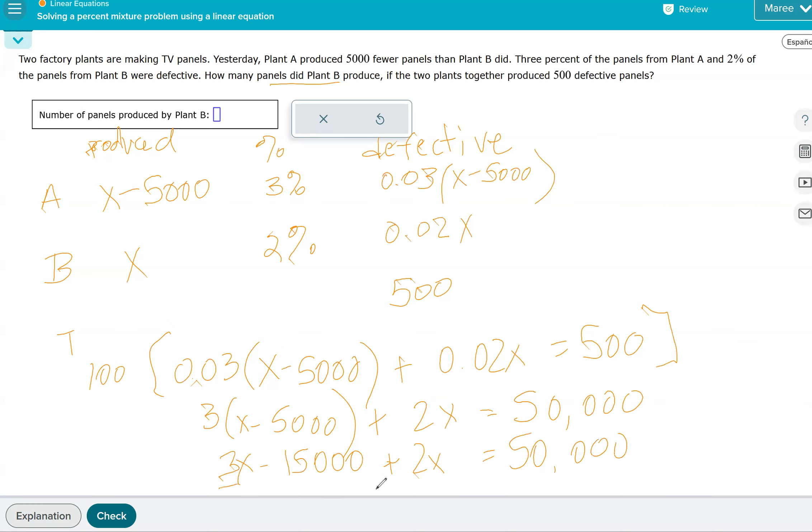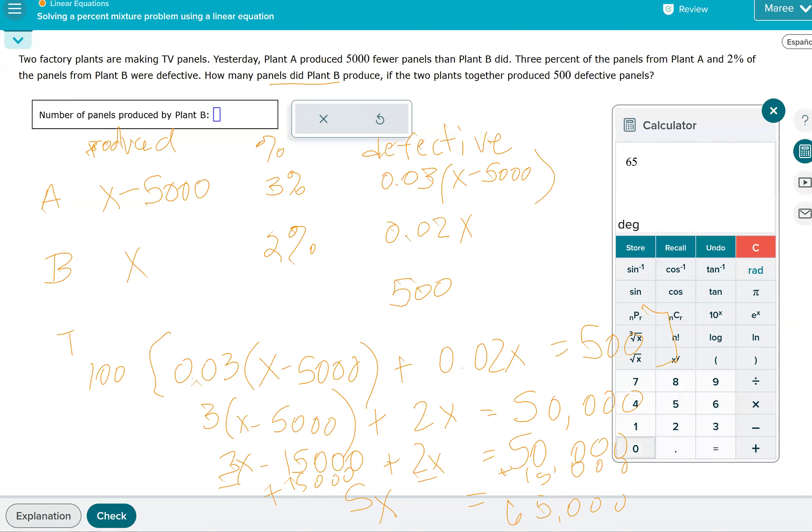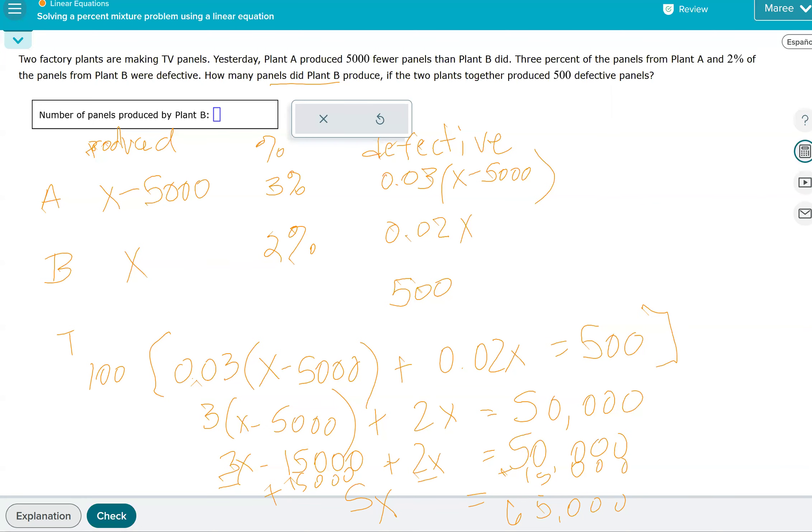So we will distribute the 3 to get 3X minus 15,000 plus 2X equals this 50,000. When we add the 3X and the 2X, we get 5X. We're going to add 15,000 to both sides, which is 65,000. Now we just need to divide 65,000 by 5, and that gives us 13,000. So that should be our answer for how many panels that plant B made.